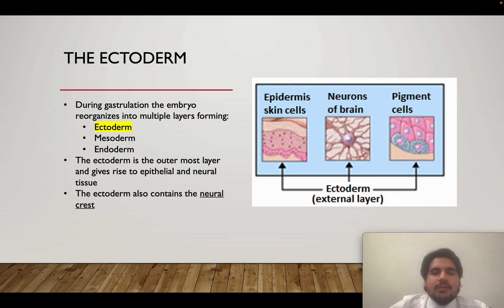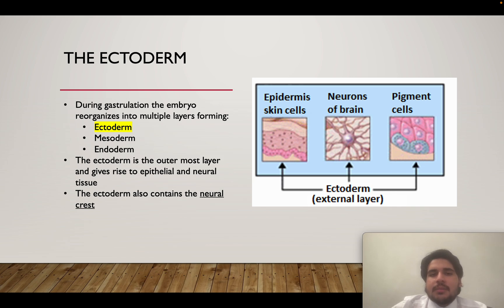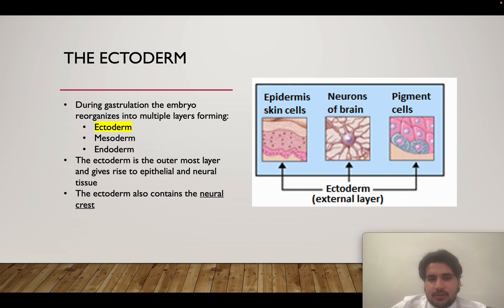The ectoderm gives rise to the epidermis, the neurons, and some other types of tissue, but we will mainly focus on the central nervous system. During gastrulation, the embryo reorganizes itself into multiple layers. The ectoderm is the outermost layer and gives rise to both skin tissue and neural tissue. It also contains the neural crest as well as the neural plate, which forms the neural tube.